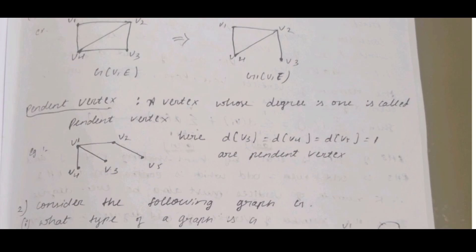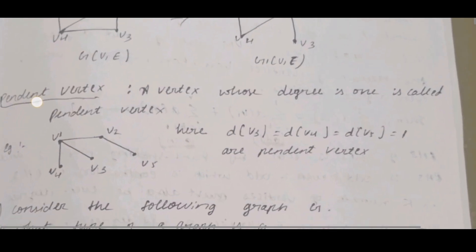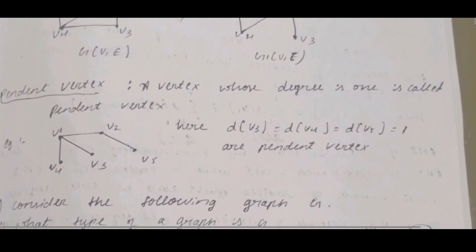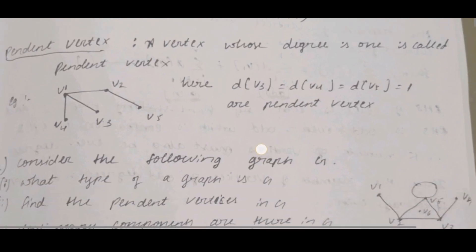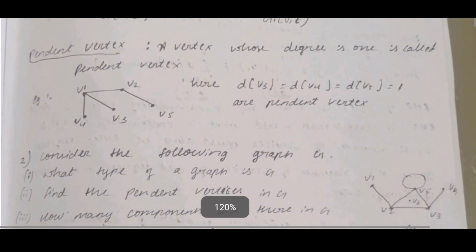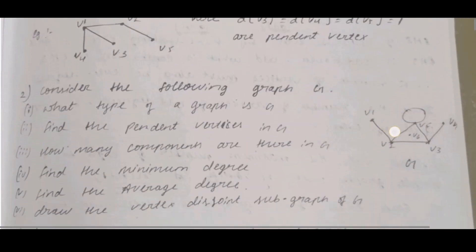Pendant vertices: a vertex whose degree is one is called a pendant vertex. In this graph, V4, V3, and V5 are the pendant vertices, meaning the degree of those vertices is one. V4 has one edge so degree of V4 is one; V3 also has one edge so degree of V3 is one. These are the pendant vertices.